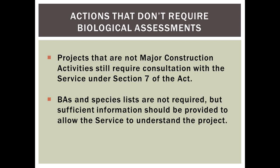BAs and species lists are not required for minor construction activities, but sufficient information should be provided to the service so we're able to consult and understand the project. By definition, 'major construction activity' uses the significance standard from NEPA, which would translate to an EIS. So as the regulation is written, if you're doing an EIS it has to be called a BA. If you're not doing an EIS, the regulation doesn't specify what it has to be called — you can still call it a BA, and we encourage that. Whether you call it a BA or something else, the information is probably going to be exactly the same because you still have to do the analysis.